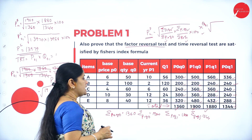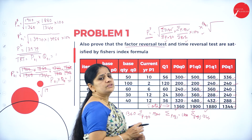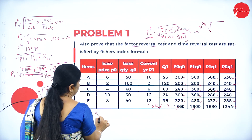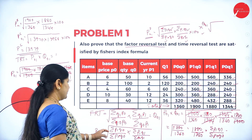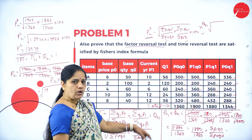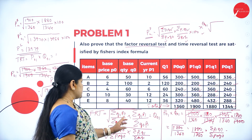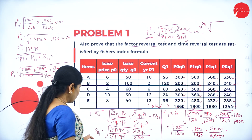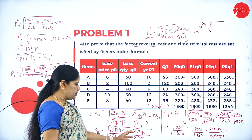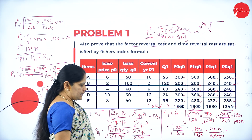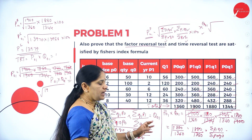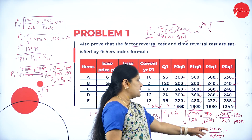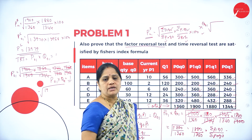For the factor reversal test, we reverse the factors — Q comes first, then P. The quantity index number Q01 = √[(σQ1P0 / σQ0P0) × (σQ1P1 / σQ0P1)]. In the price index number we have P1Q0, P1Q1. When we multiply both, we should get σP1Q1 / σP0Q0. Substituting the values gives √(1880/1360), which equals σP1Q1 / σP0Q0.